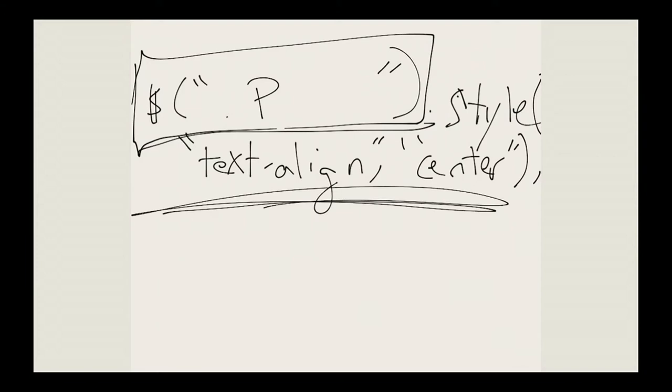Is jQuery used for initial styling or to change styling after it's already loaded? To change it — after it's already loaded. Usually you wouldn't change the style directly like this; instead you'd give it a new class, where the CSS has already been defined for that class. So by giving the selected items a new class, you're applying styles that have already been downloaded.